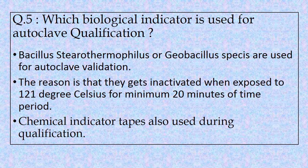Question number five: Which biological indicator is used in autoclave qualification? Bacillus stearothermophilus or Geobacillus species are used for autoclave validation. The reason for using these species is that they get inactivated when exposed to 121°C for a minimum of 20 minutes. Along with these biological indicators, chemical indicator tapes are also used during the qualification stage.